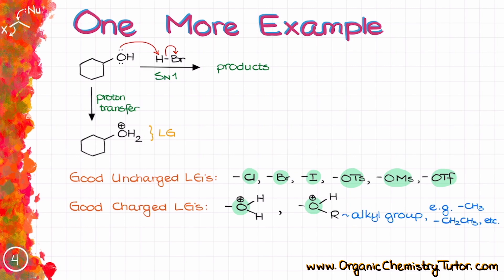So now, when we have a good leaving group, we can proceed with the leaving group dissociation, making a carbocation, which is going to look like this.